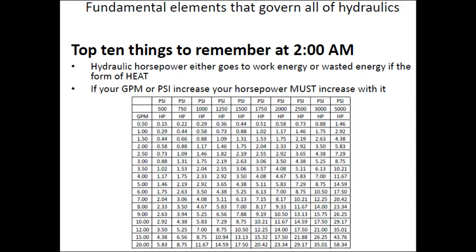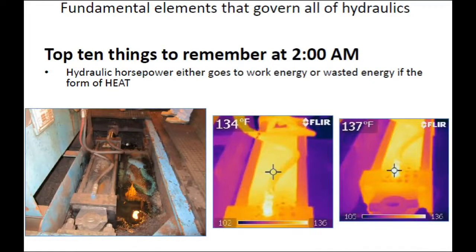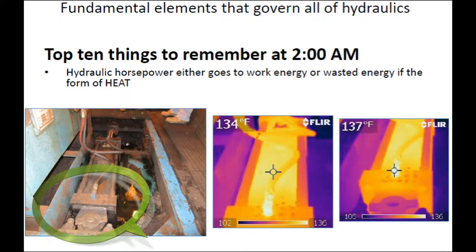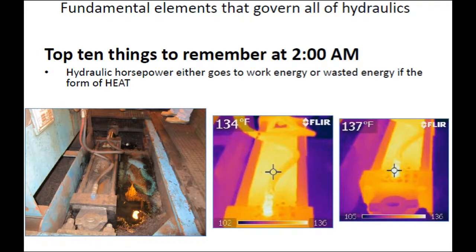Hydraulic horsepower either goes to work or it goes to wasted energy in the form of heat. Here's an example: I'm measuring a hose temperature at 134 degrees, and the 90-degree fitting right next to it is three degrees hotter. When oil has to work unnecessarily — like going across a 90-degree fitting where it becomes turbulent — that is wasted energy in the form of heat. That is called pressure drop.